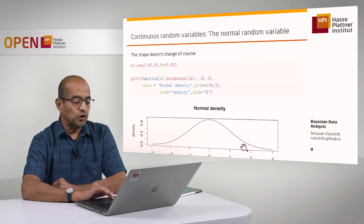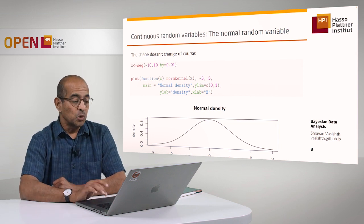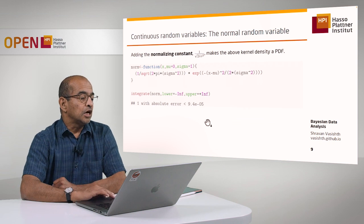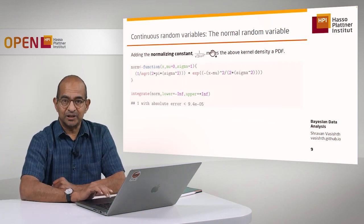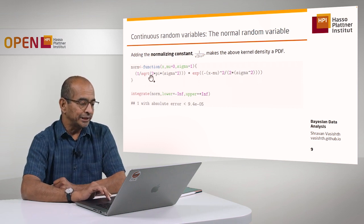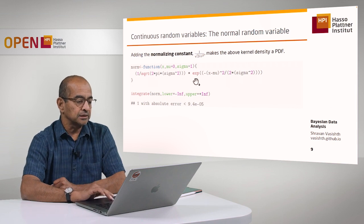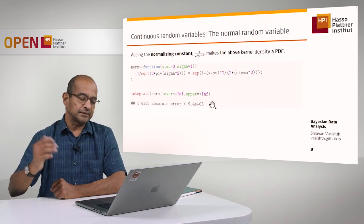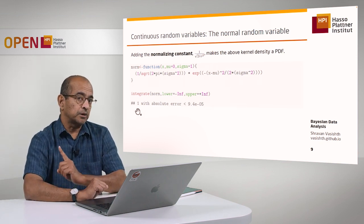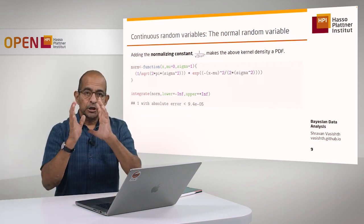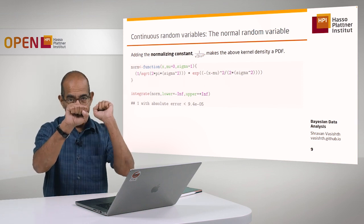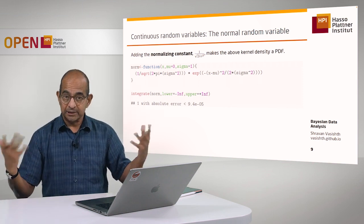The way this is fixed is by adding the normalizing constant — the second term in the normal distribution. In this plot you can see the shape has not changed; it's still a normal distribution. What has changed is that the area under the curve is now larger than one. Adding the normalizing constant rescales the distribution. Now if I write the full normal distribution with both the kernel and the normalizing constant, and integrate from minus infinity to plus infinity, I get an area of exactly one — so now it's a proper probability density function.